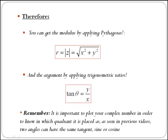To get this last one, it is important that you remember that you need to plot your complex number in order to know in which quadrant it is placed. As we have seen in previous videos, you can have two angles with the same tangent, sine, or cosine.